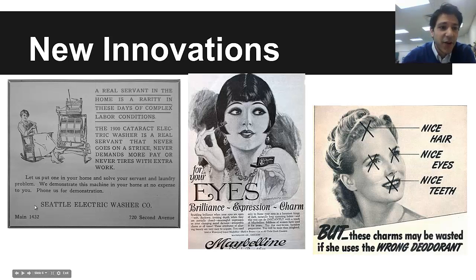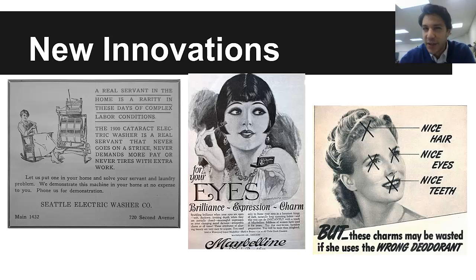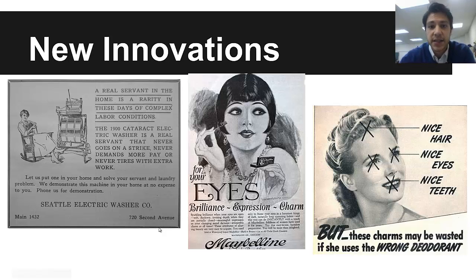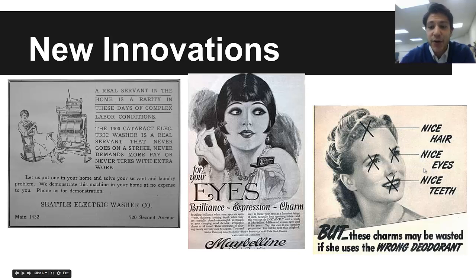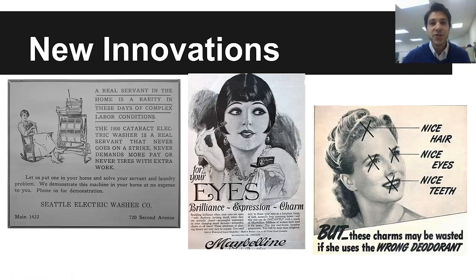Here are some examples. A washing machine ad reads: 'A real servant in the home is a rarity in these days.' A Maybelline ad plays off beauty — 'For your eyes. Brilliance. Expression. And charm. Use this product and you will look brilliant, expressive, and you will have charm.' And my favorite: 'Got nice hair, nice eyes, a great smile — but these charms may be wasted if she uses the wrong deodorant.' All of her qualities can be wasted if she doesn't use the right deodorant. These advertisements were going out to the public, telling people to buy this stuff or people won't like you. We still do it today, just a little more subtly. These exemplify 1920s advertising. And how do we get advertising to the masses? The radio.